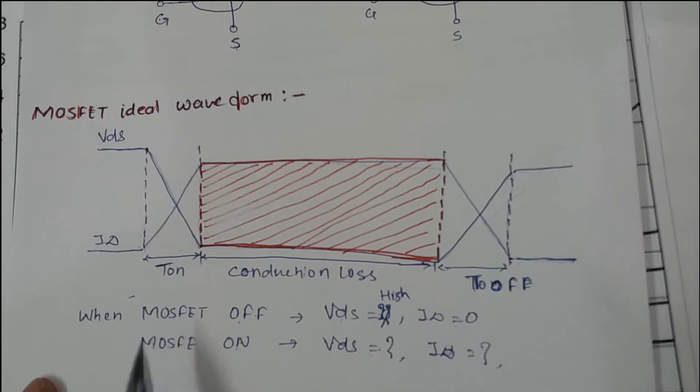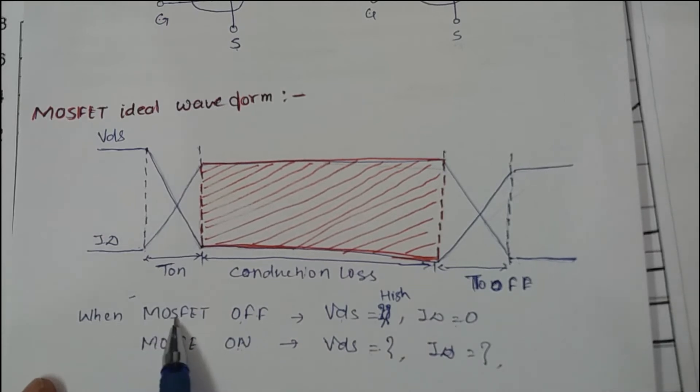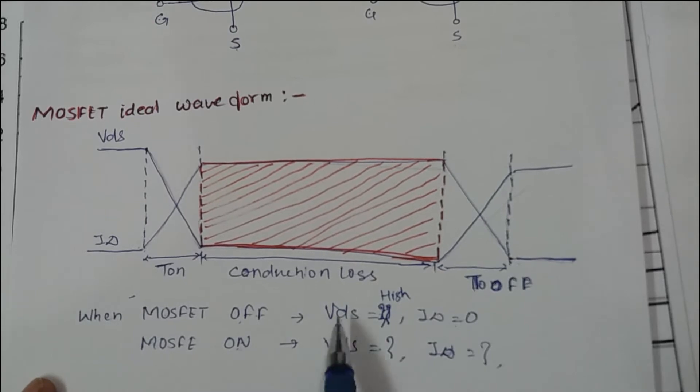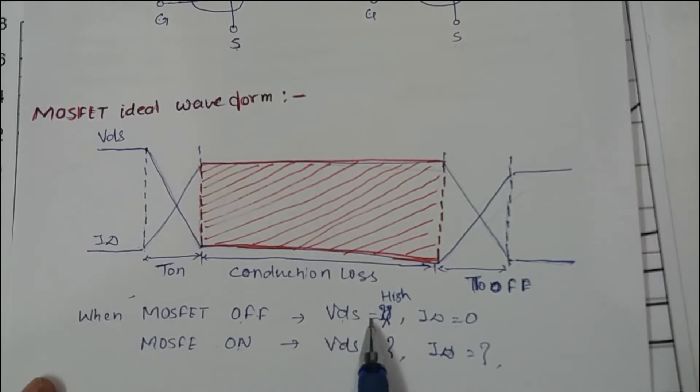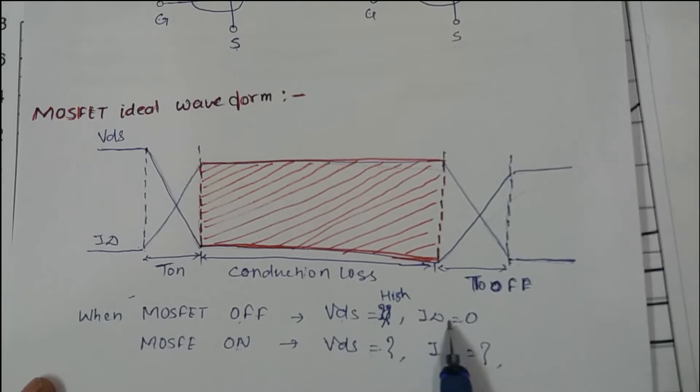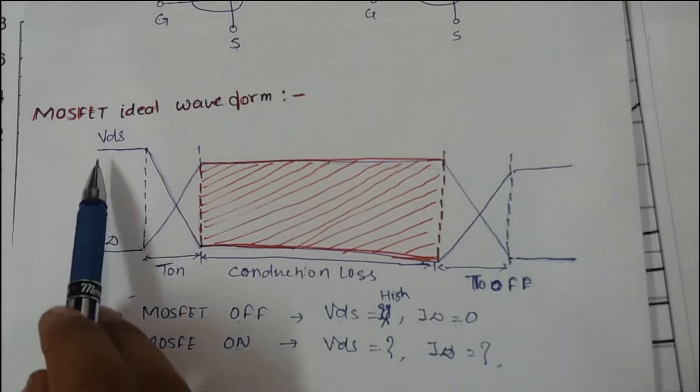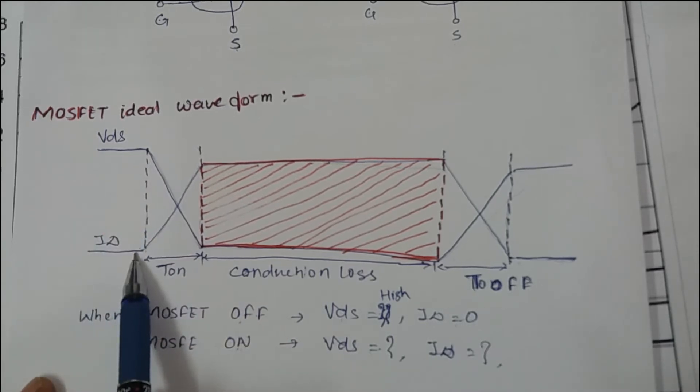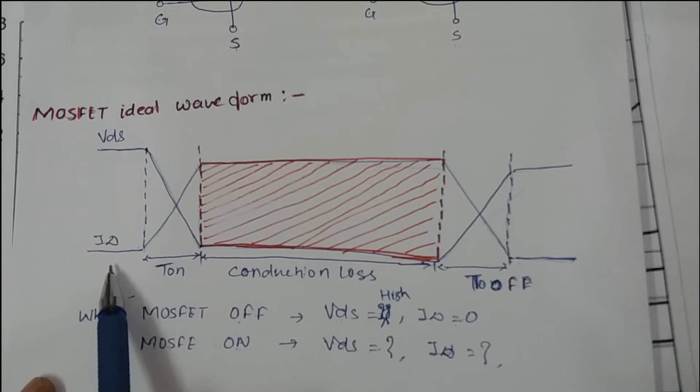So now let's have a look at the MOSFET ideal waveform. There are two conditions: when MOSFET is OFF and when MOSFET is ON. When MOSFET is OFF, VDS is some high value and IDS equals to 0. When MOSFET is OFF, VDS lies at some high value and ID equals to 0. Why ID equals to 0? Because there is no channel formation, so no current is flowing through it.